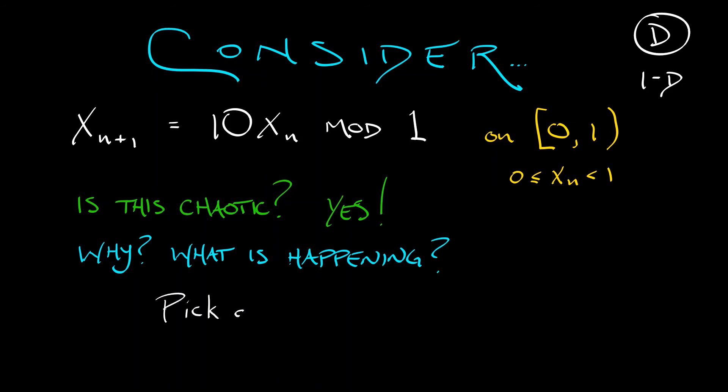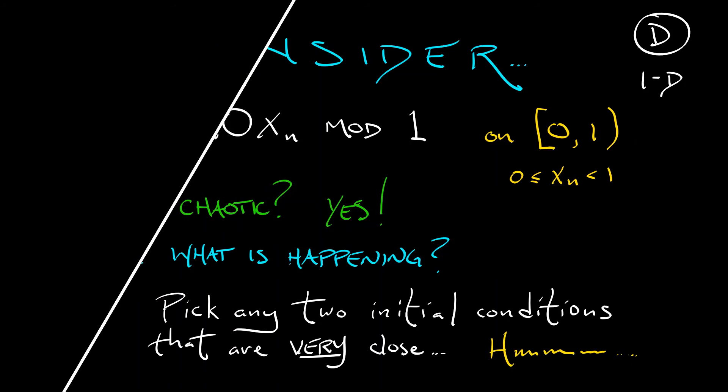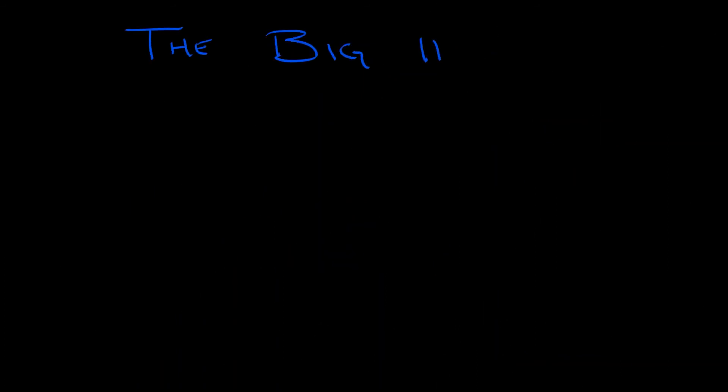Well, let's think about it this way. Pick any two initial conditions that are close, very close. I don't care how close. And iterate both of them forward in time. Multiply by 10 mod 1, multiply by 10 mod 1, multiply by 10 mod 1. What happens? It seems like over time, these two very, very close initial conditions would separate and become independent, go their own way. This is the hallmark of chaotic dynamics, and this leads us to the big idea.